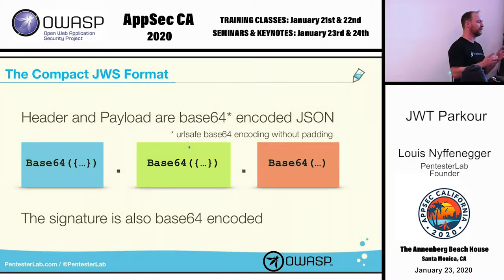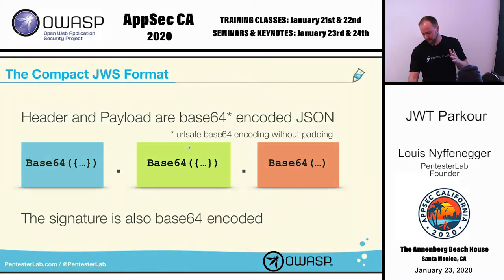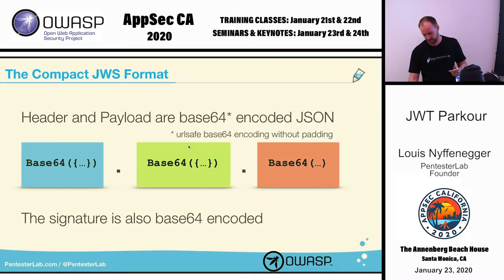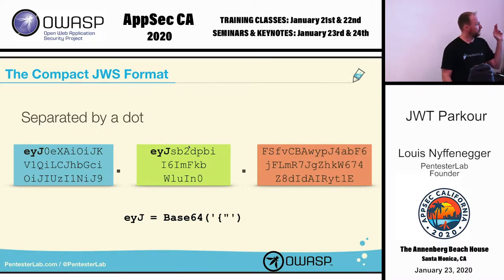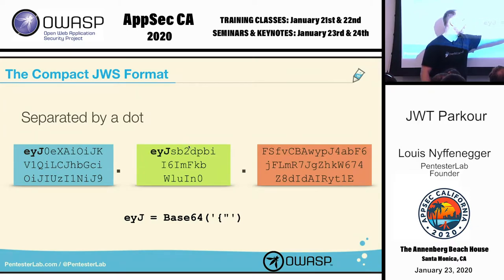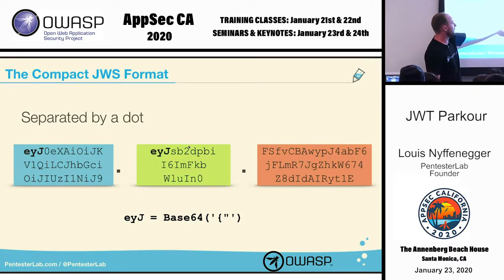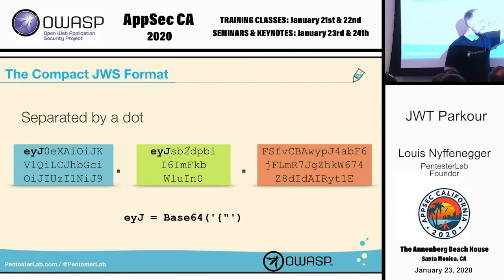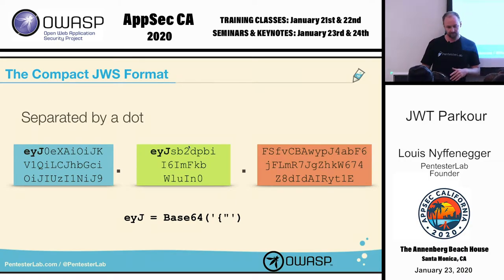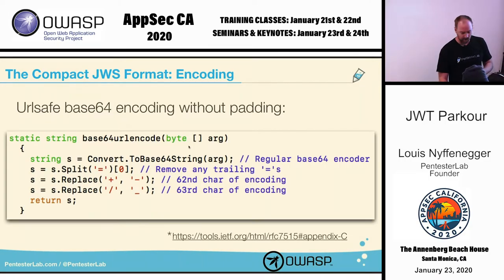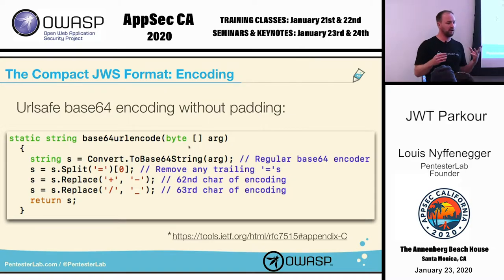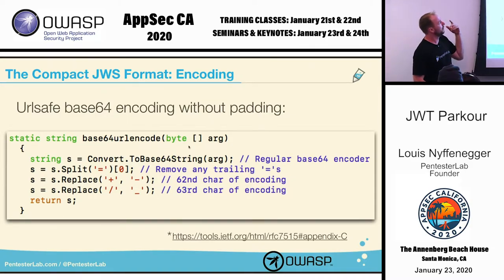It's not actually standard base64 — it's URL-safe base64 encoding without padding. If you look at the base64 of JSON, something starting with a curly bracket and double quote gives you 'eyJ'. That's why when you see a token starting with 'eyJ' dot 'eyJ' dot base64, you have JWT — that's a good way to detect them.